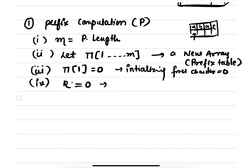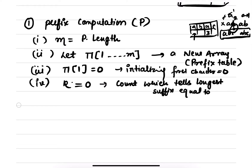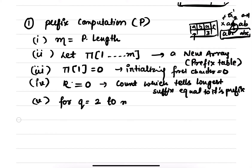Then we set k, which is nothing but a count, to 0. k is the count we use to find the largest match — for example, a, b, a, b or a, b, c, a, b, c. Rather than using 1, 2, or 3, our prefix value will be 3. That is the count which tells the longest suffix equal to its prefix.